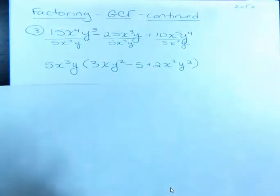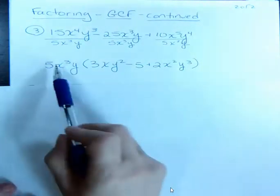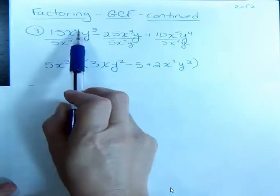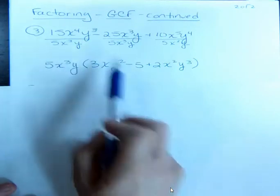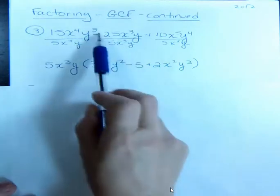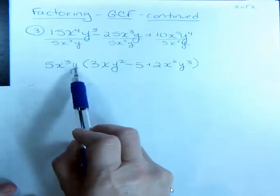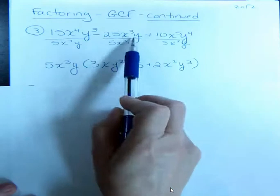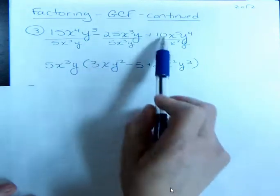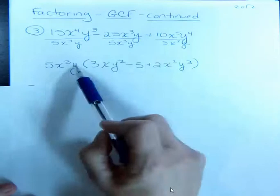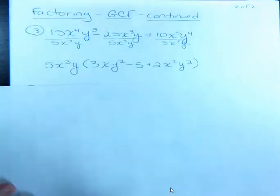If I wanted to check it, I could go back and multiply. 5 times 3 would be 15. 3 x's and 1 more x is 4. 1 y and 2 more y's is 3. My signs are correct. 5 times 5 is 25. I have x to the 3rd and y. That's what's there. And then 5 times 2 is 10. I have 2 and 3, which is 5, and 1 and 3, which is 4. So that checks out to be correct.